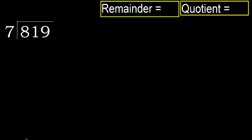819 divided by 7. 8 is not less, therefore with 8. 7 multiplied by which number is nearest to 8 but not greater? 7 multiplied by 2 is 14 — 14 is greater. Multiply by 1: 7 is not greater. Subtract: 8 minus 7 is 1.